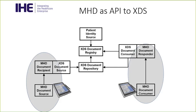As an API to XDS, or XDS on FHIR, MHD takes the XDS actor diagram at the center and adds surrounding pieces. On the left-hand side is publication: a medical device or mobile device may want to publish documents. They would be an MHD document source, sending to an MHD document recipient. That document recipient is grouped with an XDS document source, and thus triggers the XDS publication transactions.